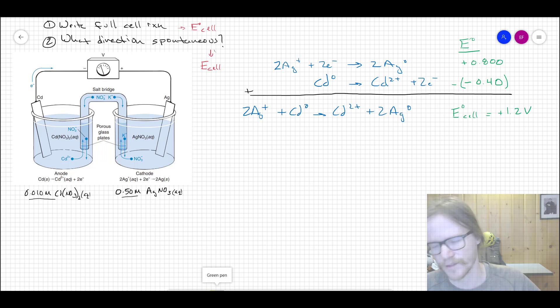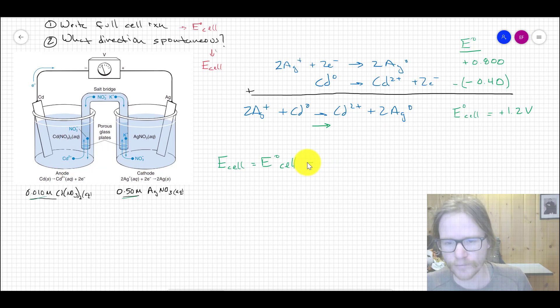What that tells us is that under standard conditions—so standard temperature, pressure, and one molar of everything—the reaction is spontaneous in the direction as it's written. But we know that we have not one molar conditions, we have a half a molar and we have 0.01 molar in the other, so that requires us to pull out our trusty Nernst equation. That's going to be Ecell equal to E°cell minus RT/nF natural log and then we'll just treat this in concentration.